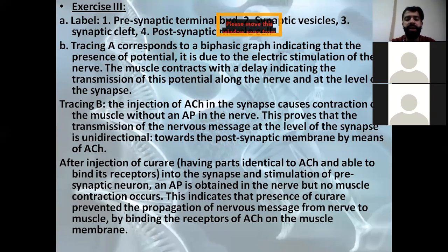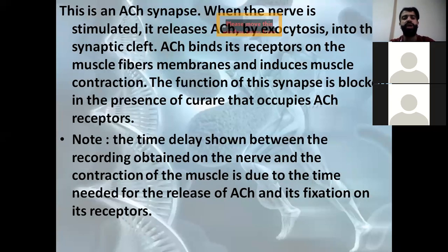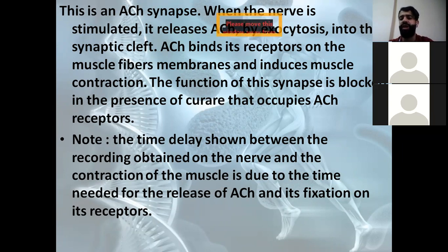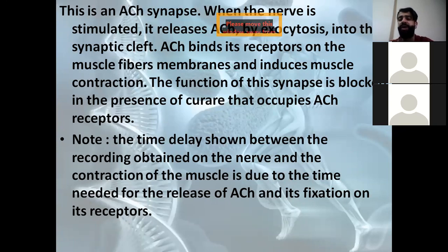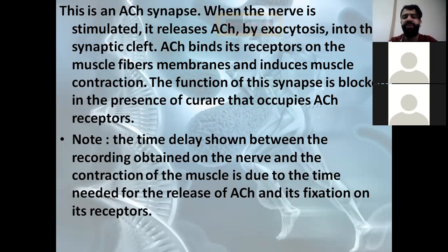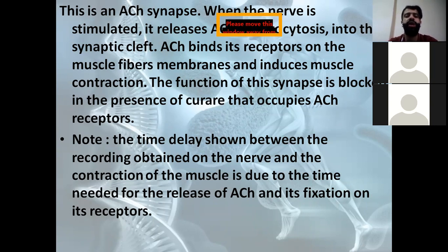This blockage leads to relaxation of the muscle and may even lead to paralysis. Acetylcholine, whenever present, propagates the nervous message and binds to acetylcholine receptors on the muscle. Acetylcholine is released by exocytosis from secretory vesicles in the pre-synaptic terminal toward the synaptic cleft, and when it binds to receptors on the post-synaptic membrane, it leads to muscle contraction. However, curare blocks this function by binding to those same receptors, leading to muscle relaxation.